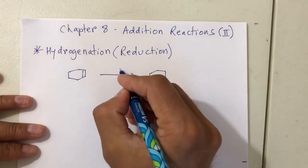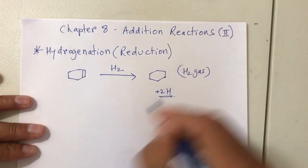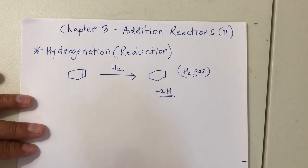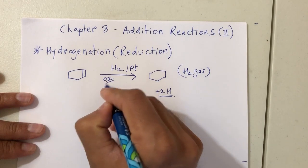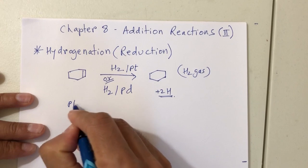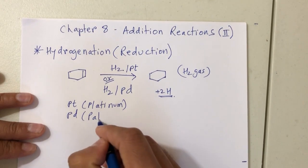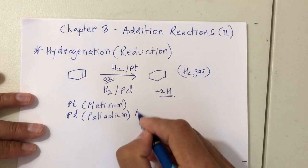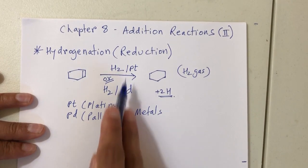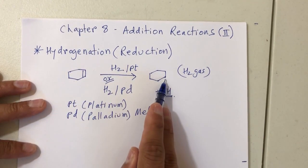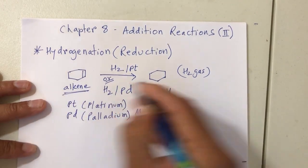To go from the alkene to the alkane, you need two hydrogens — that's H₂, hydrogen gas. The problem is hydrogen gas cannot react by itself; you need to throw in a catalyst. You'll see H₂ with platinum (Pt) or H₂ with palladium (Pd). Either metal will convert your double bond into a single bond, converting your alkene to an alkane.